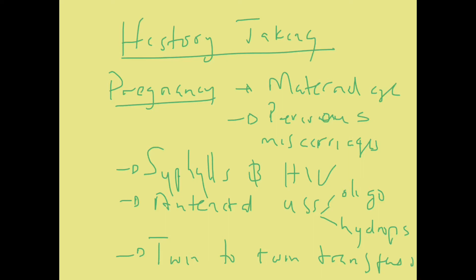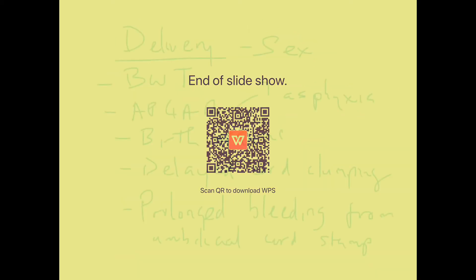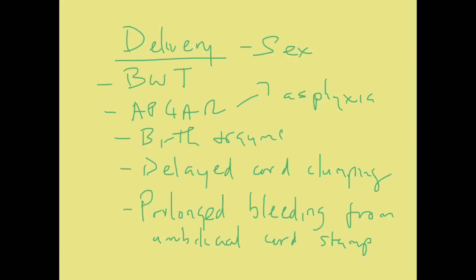For delivery, we want to know the sex of the baby. If the baby is a boy, they are prone to posterior urethral valves. The birth weight is important because low birth weight is associated with congenital infection, like TORCH infections, which usually cause edema by causing congenital nephrotic syndrome. Also, other congenital dysmorphism can present with low birth weight and may be associated with congenital heart disease.